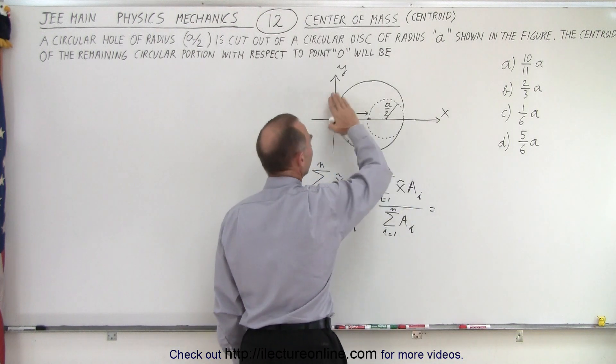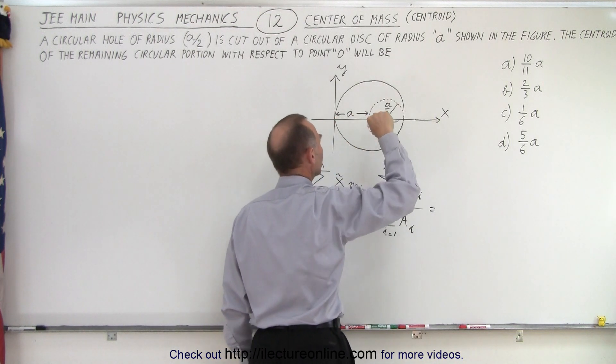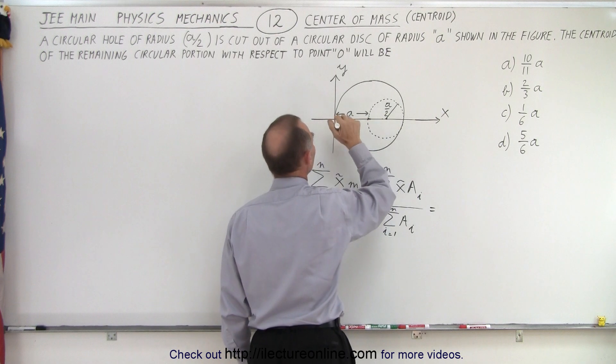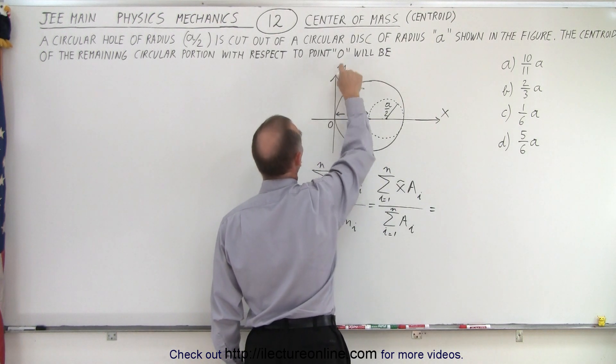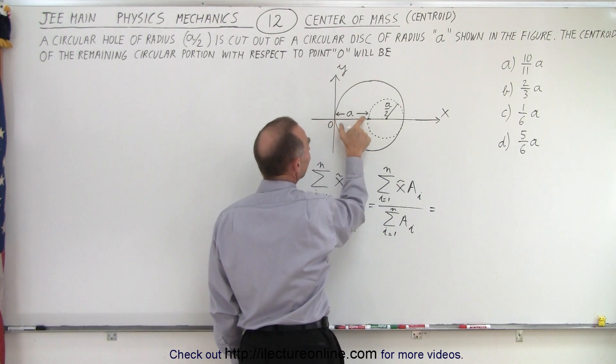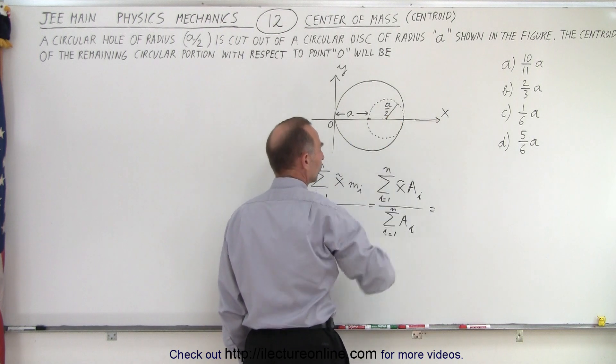So first of all, we take the disk. The centroid of the disk would be right at the center, which would be a distance of a away from the origin. That's the point O, the origin. So distance a for the whole disk before we cut out the hole.